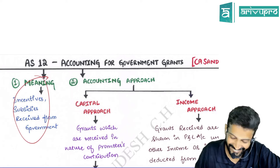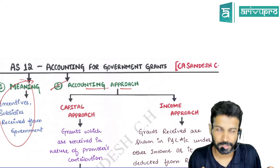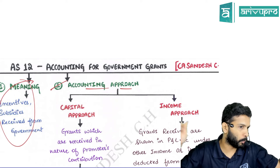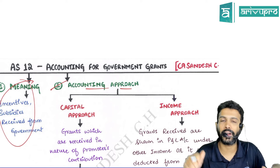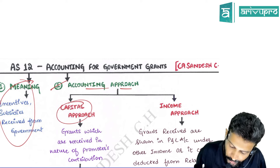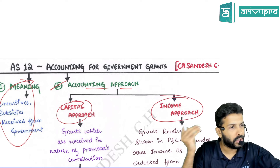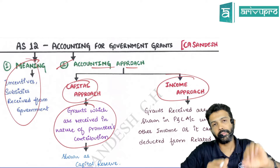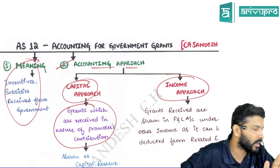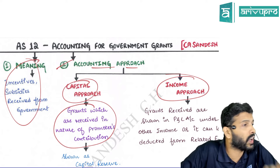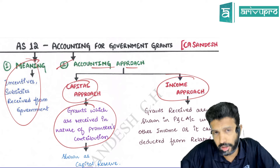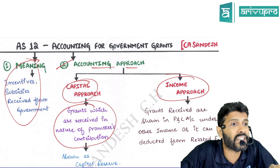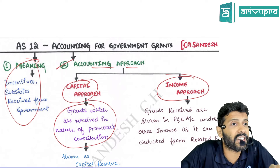As far as government grants are concerned, there are two broad approaches: one is the capital approach and another is the income approach. A key keyword to remember: if grants received are in the nature of promoters' contribution, then we say such a grant is a capital grant.